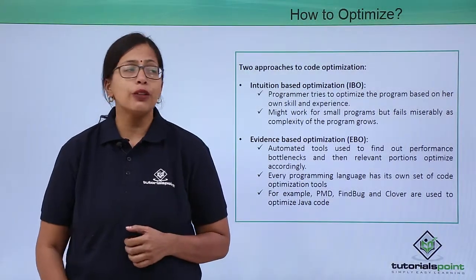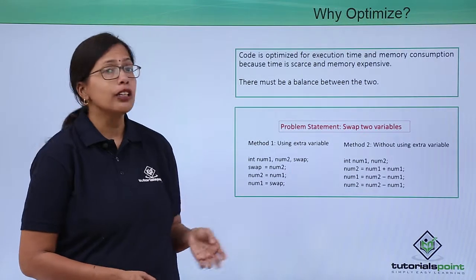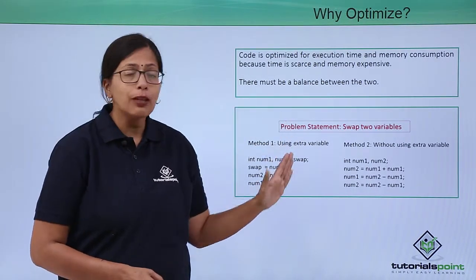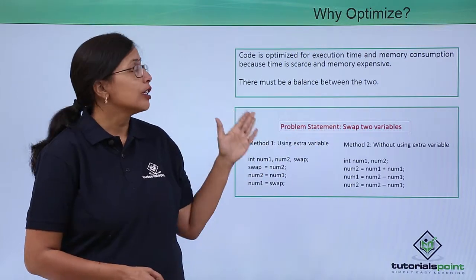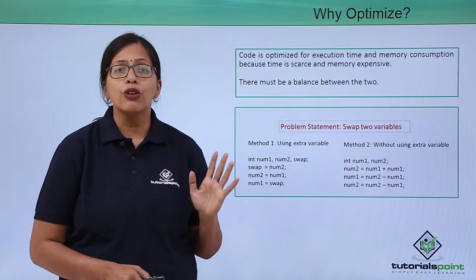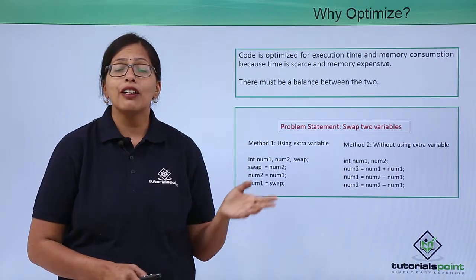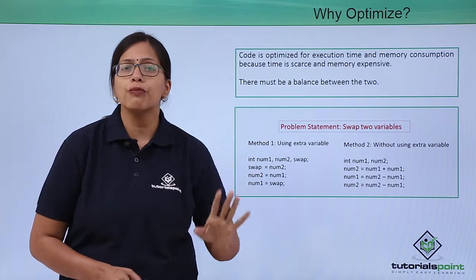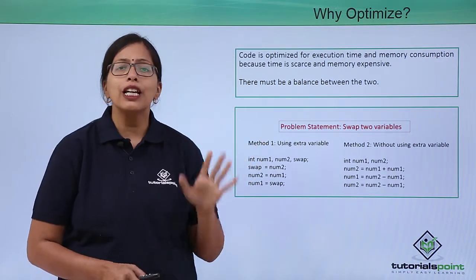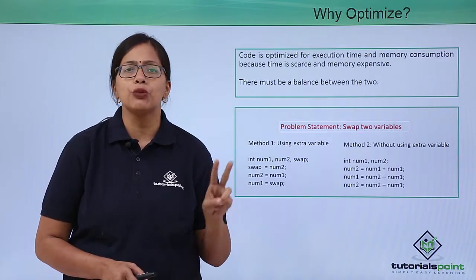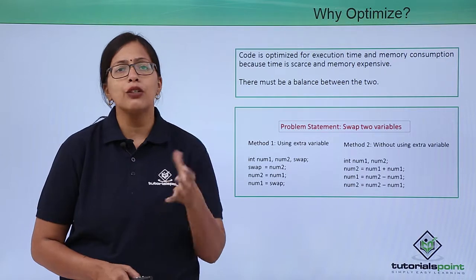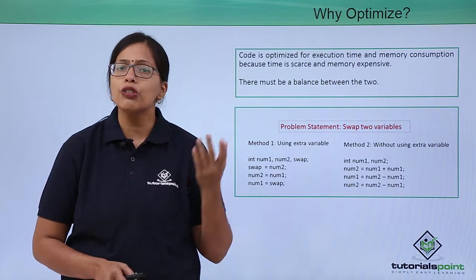Code is optimized for execution time and memory consumption because time is scarce and memory is expensive. To optimize these two most important resources — time and memory — we should optimize our code. There should be a balance between the two: to save on time, you should not use too much memory, and to save on memory, you should not use too much time.